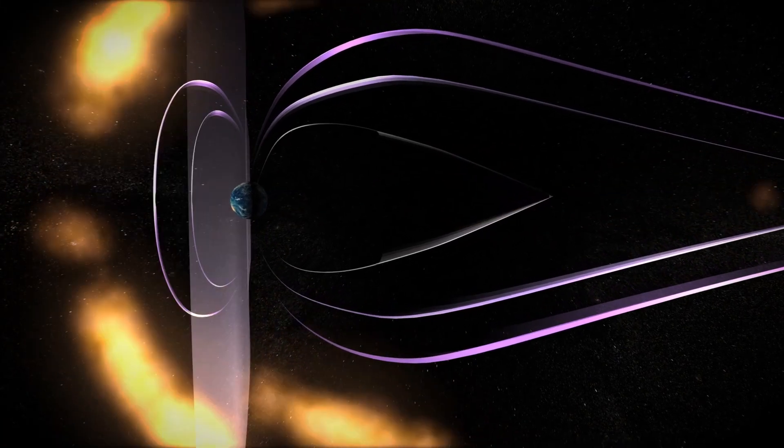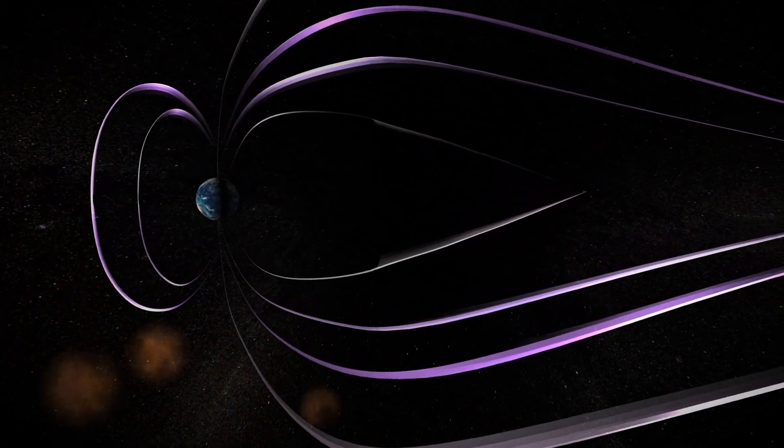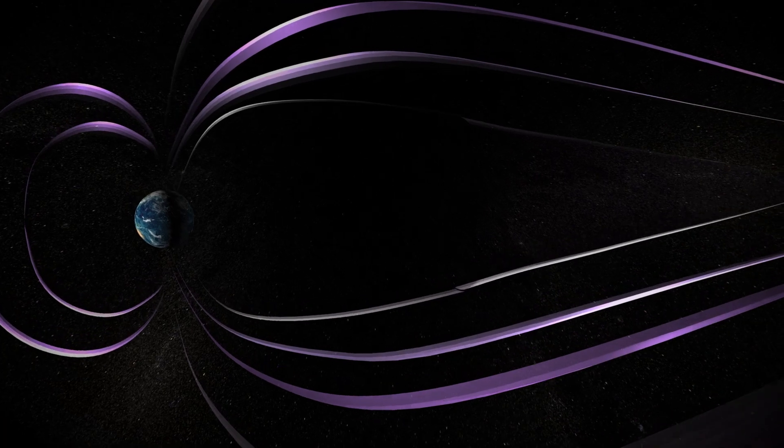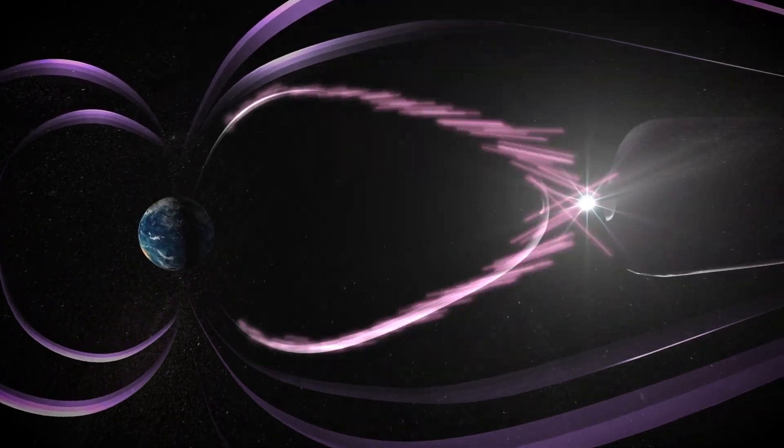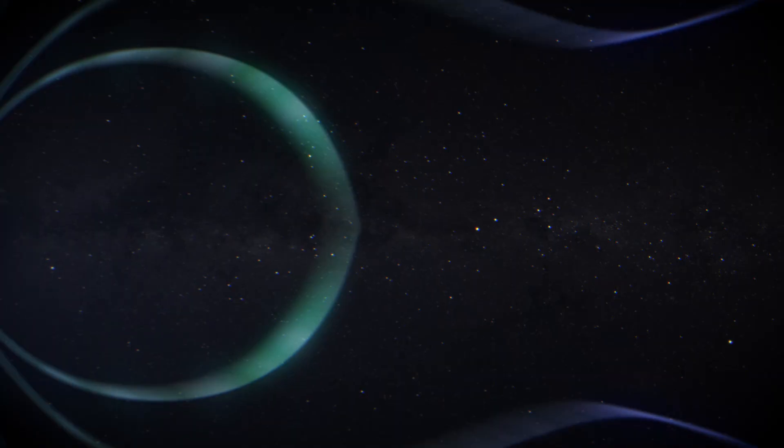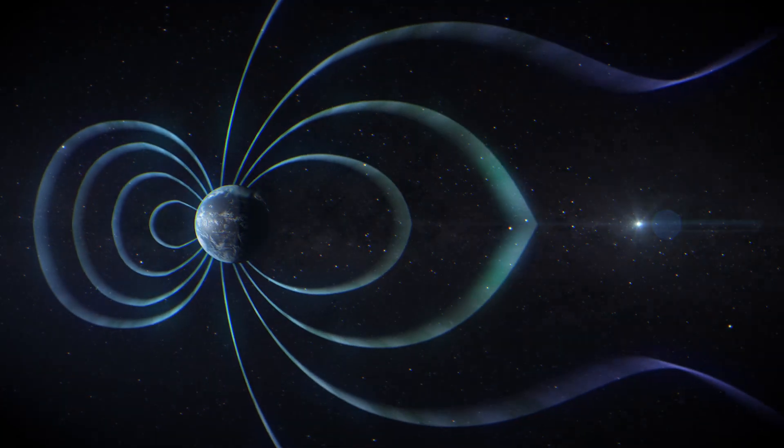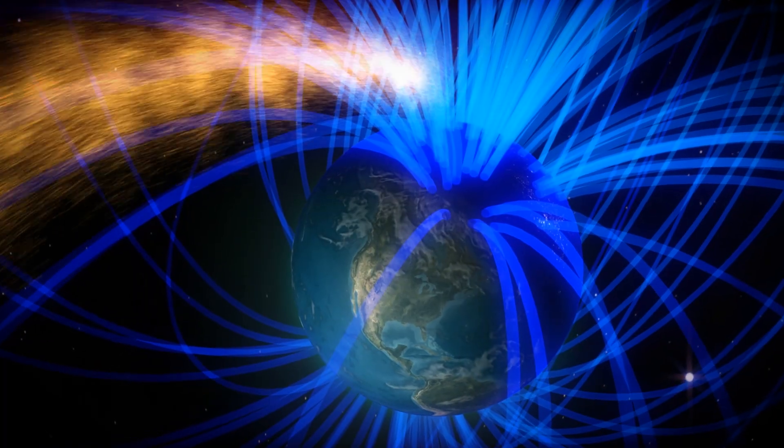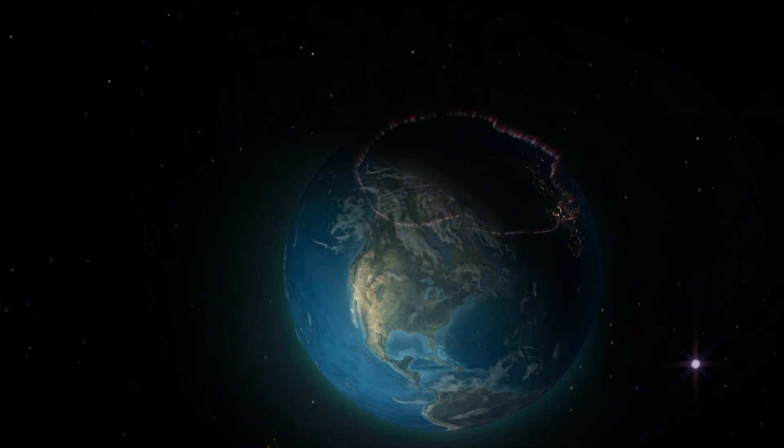Closer to home, magnetic reconnection between the sun and Earth's magnetic fields is a critical way energy is transferred around our planet. For example, when magnetic reconnection occurs on the night side of Earth, it can push particles down toward the poles, triggering auroras.